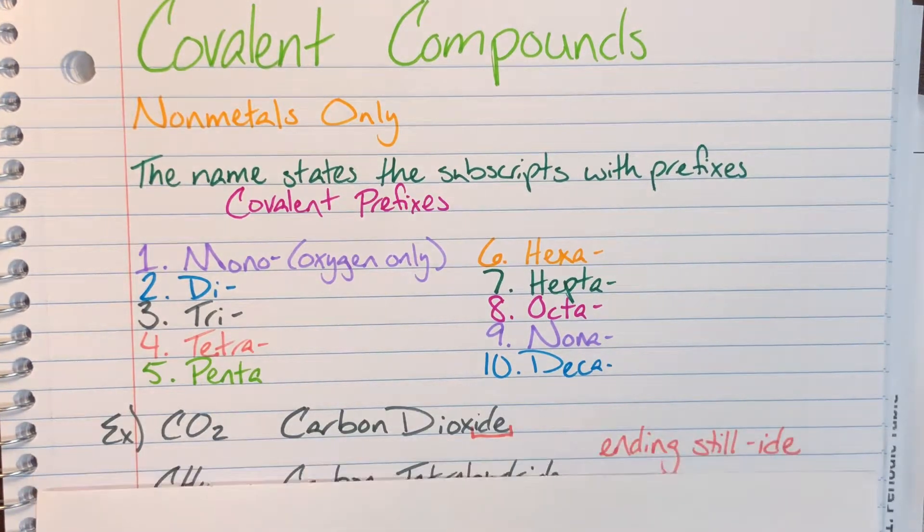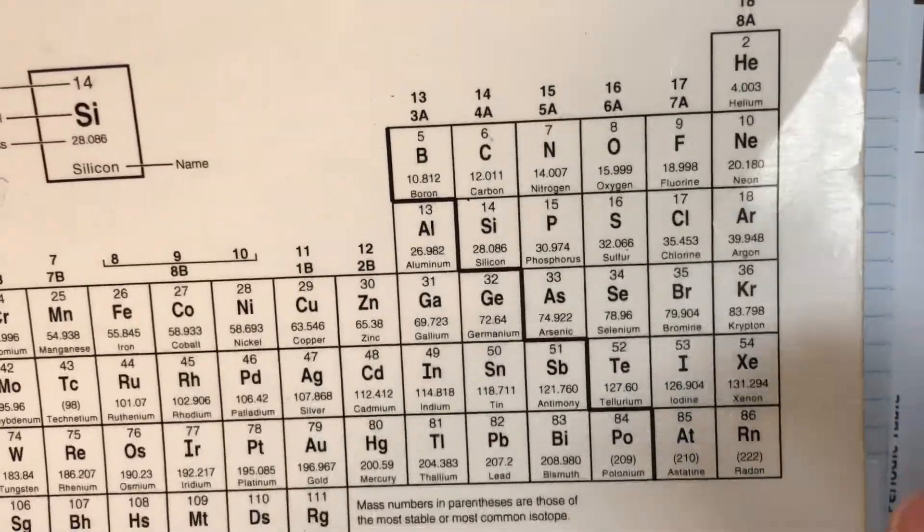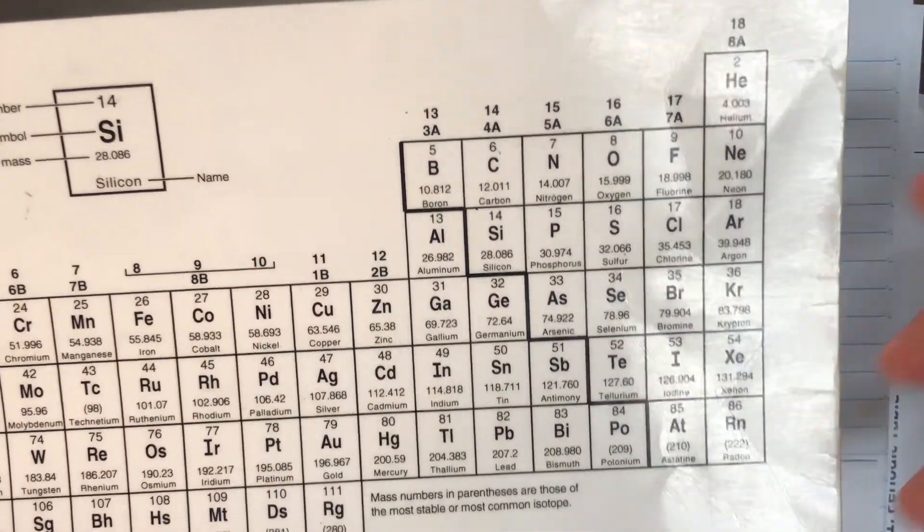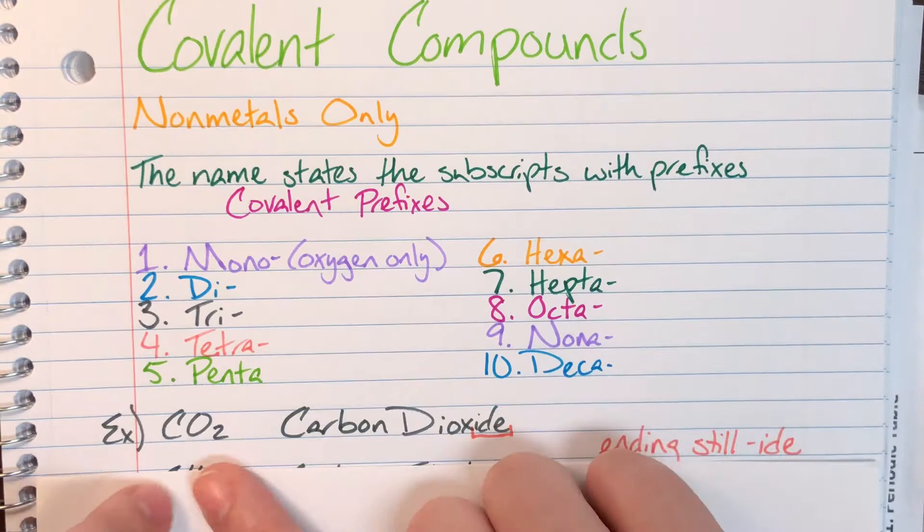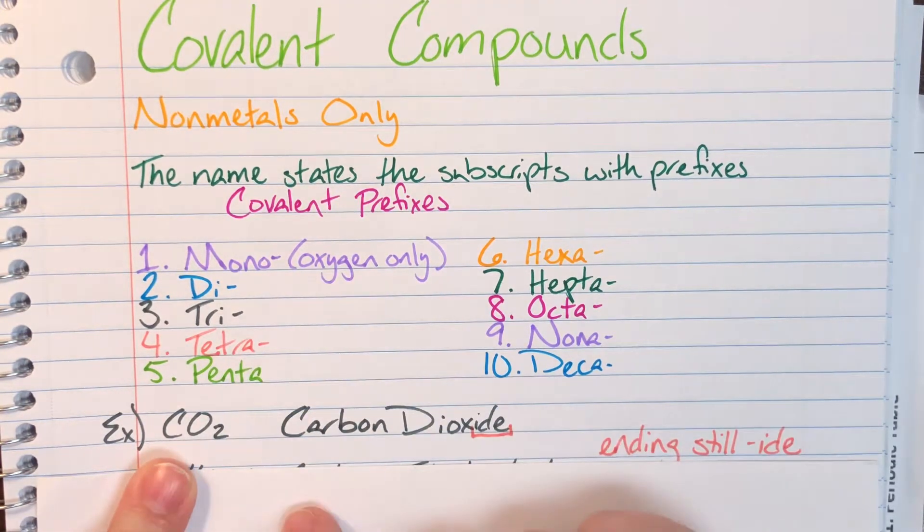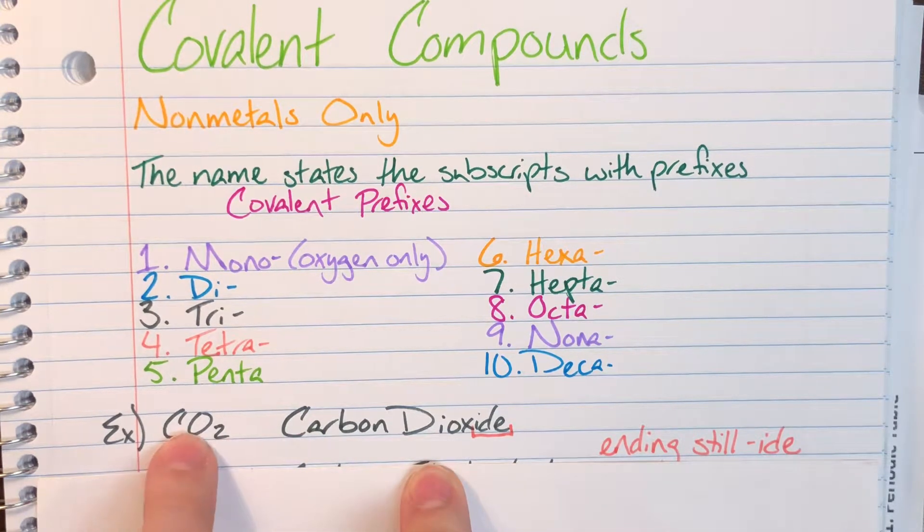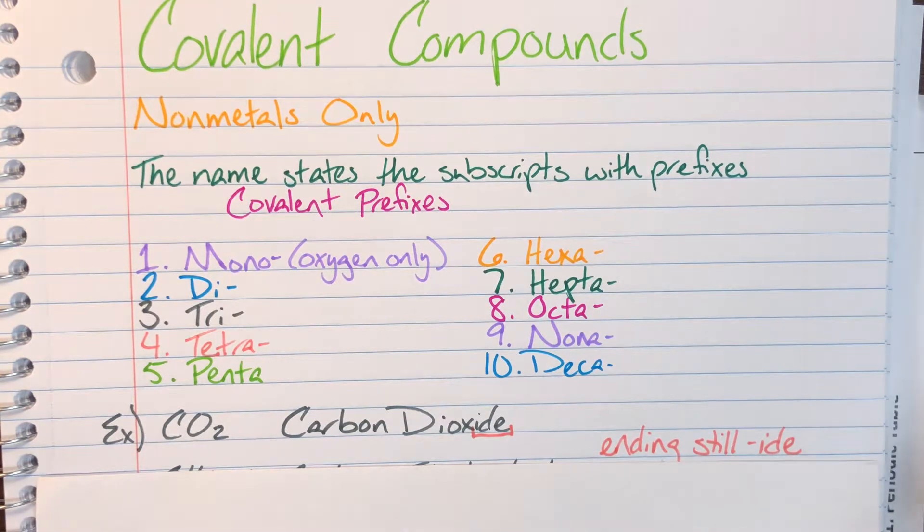Okay, so here we have an example of a covalent compound. So we have carbon and we have oxygen. Both carbon and oxygen are to the right of that stair step line, which would make them both nonmetals, which means that they are going to be a covalent compound, which means I need those prefixes. I only have one carbon, but again, mono only for oxygen. So I'm just going to go ahead and I'm just going to straight write carbon. I have two oxygens, so I'm going to use the prefix of di, and then I will still use that anion name of the second element, so I'm still going to end in ide. So CO2 would be carbon dioxide.